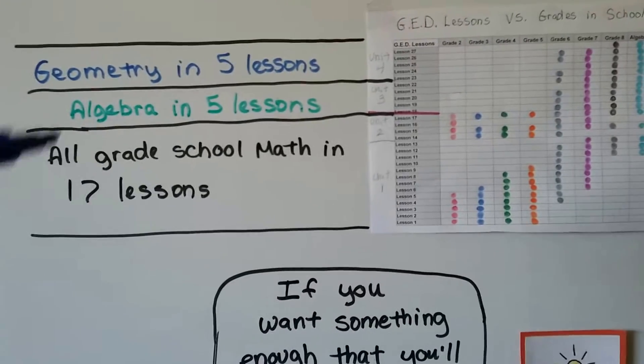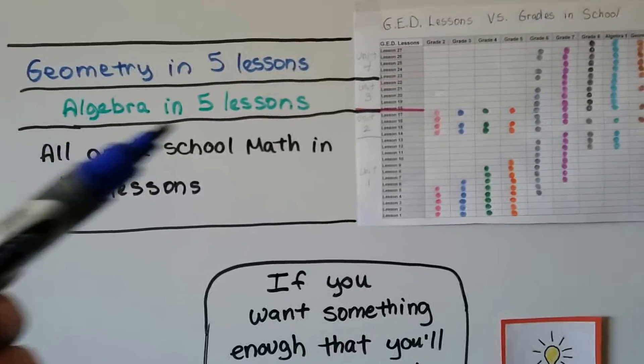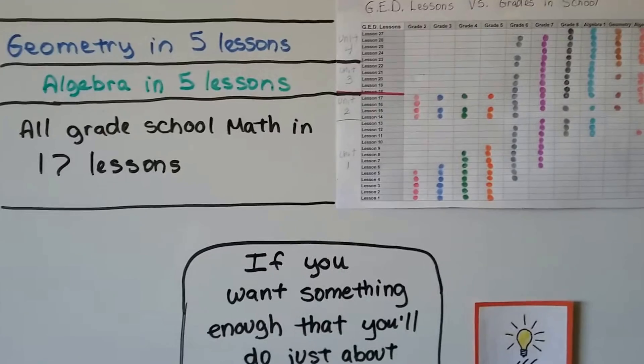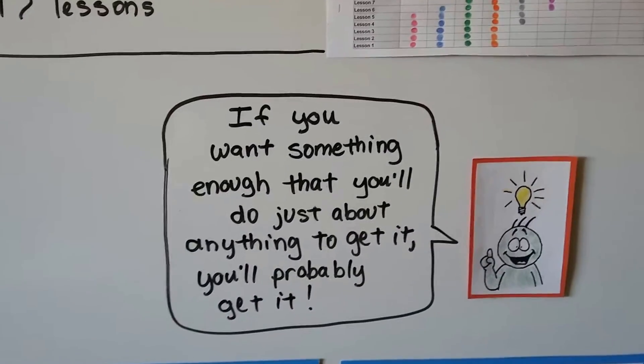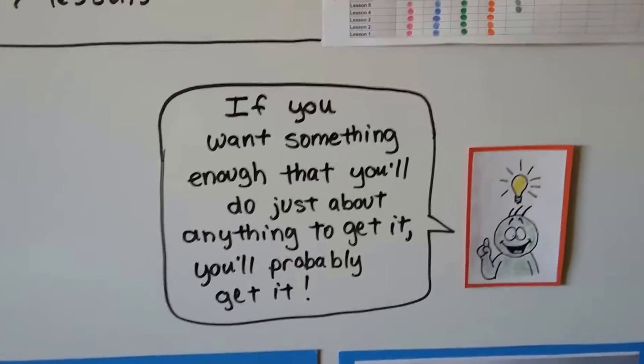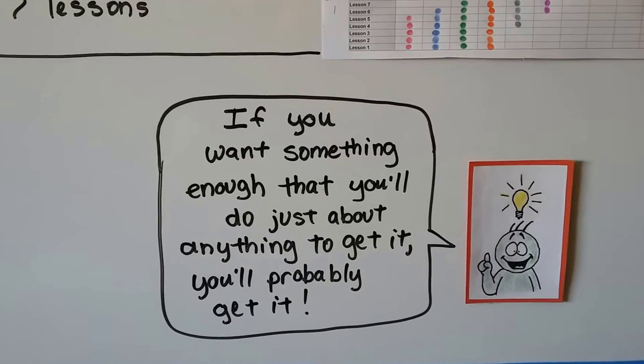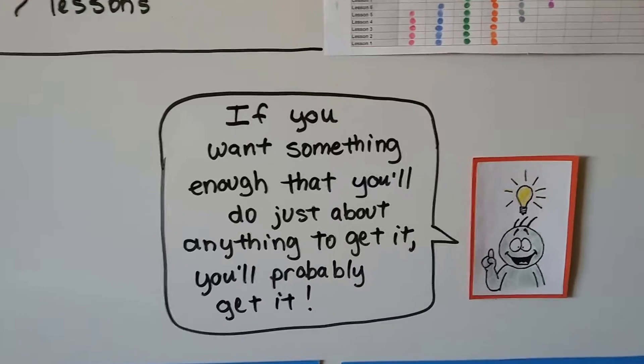So, you can't learn all of algebra in five lessons and all of geometry in five lessons, but you could, if it was a refresher course, if you already learned it all and you're just doing it as a refresher course, which is what this is. Now, if you want something enough that you'll do just about anything to get it, you'll probably get it. Like the bride who's trying to lose 10 pounds to fit into a wedding dress. She's going to do anything she can to fit into that wedding dress.